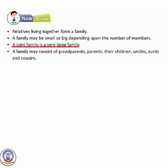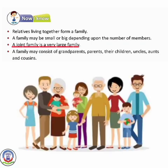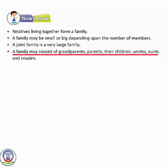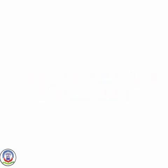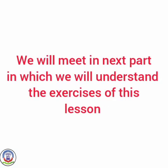A joint family is a very large family. It includes grandparents, parents, children, uncles, aunts and cousins — yaani unke bachche jo hamare bhai behen lagte hain. Now you have to read this lesson thoroughly. We will meet in the next part in which we will understand the exercise of this lesson.